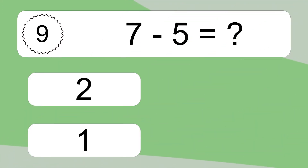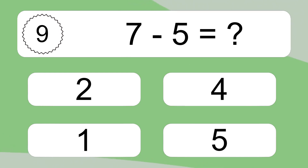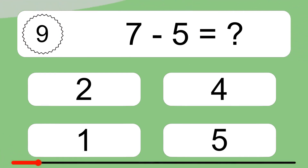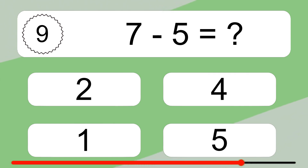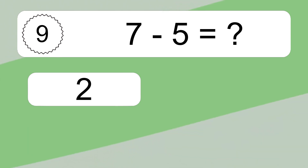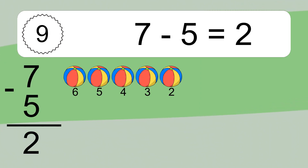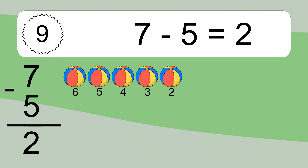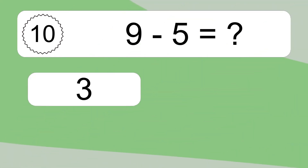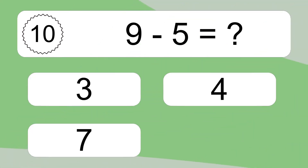7 minus 5 equals what? 7 minus 5 equals 2. Let's count it: 6, 5, 4, 3, 2. 9 minus 5 equals what?